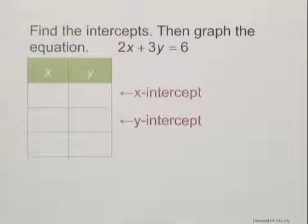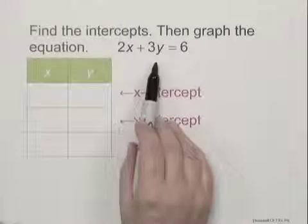Find the intercepts, then graph the equation. We have 2x plus 3y equals 6.